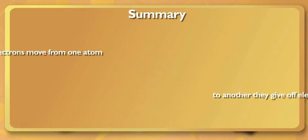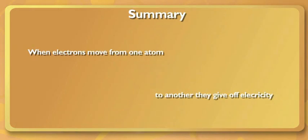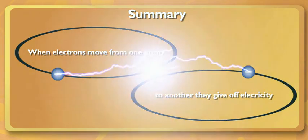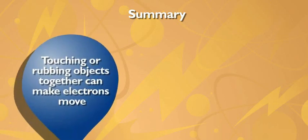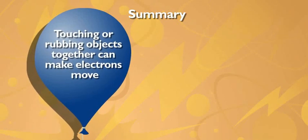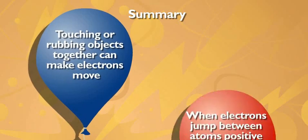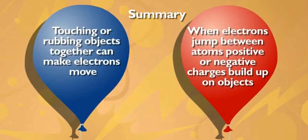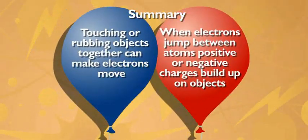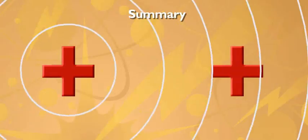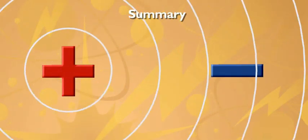Incredible. All because tiny electrons move from atom to atom, giving off electricity. Who knew that just touching or rubbing things together could make electrons jump from one atom to another? Or that those electrons make negative charges build up and cause static electricity? Or that like charges repel and opposite charges attract?